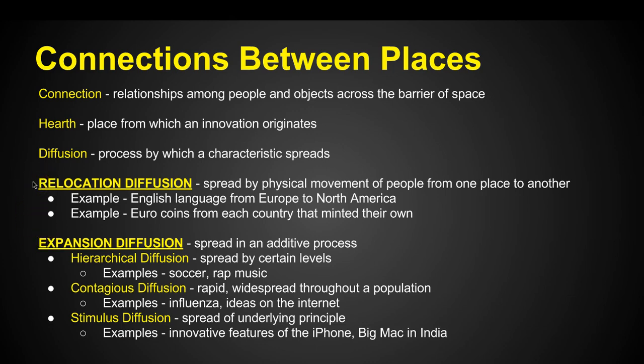There are two different kinds of diffusion. The first is relocation diffusion, which is the spread by physical movement of people from one place to another — they take a trait or characteristic, physically move, and it's now in the new area. One example is when the English language was diffused from Europe to North America during colonization. The second example is the euro — coins originated from individual countries, and as people traveled and moved to a new country within Europe, those coins would relocate because people were taking them there.